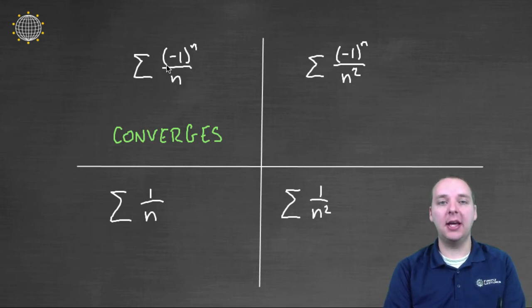And one thing that helps this guy converge is having the plus, minus, plus, minus. The negative terms negating a lot of the positive terms, and it really helps this guy converge.